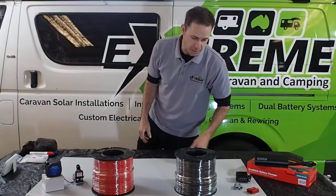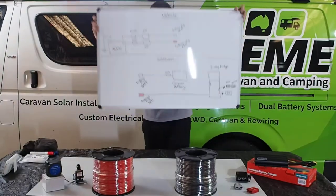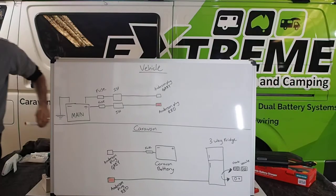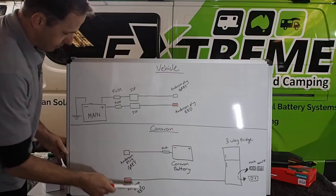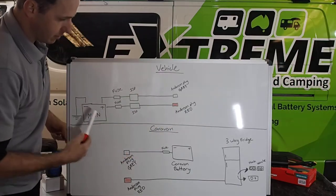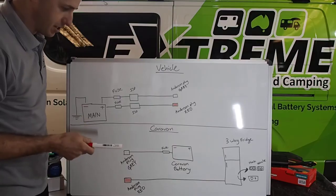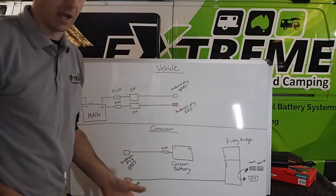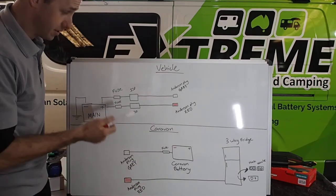So get straight into it. Pretty simple. I've done a diagram. So pretty easy. This is your vehicle and there's your caravan. This is just a standard isolator setup. No DC charger incorporated, no extra batteries. Just your standard run of the mill. I've got a car, I've got a van, I want to keep everything charged up and go. This is the way to do it.